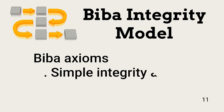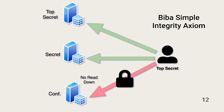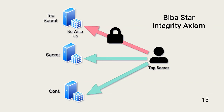The BIBA Integrity Model focuses on data accuracy and usability. It consists of two axioms: simple integrity and star integrity. While the Bell-LaPadula simple security property denies write-down and read-up, the BIBA Integrity Model protects in the opposite direction. The simple integrity axiom protects against the subject reading lower security levels, preventing the compromise of sensitive information with information of a lesser security level. The star integrity axiom prevents writing information to locations or data sets at higher security levels, protecting the integrity of highly classified information by disallowing the integration of lower-level information.